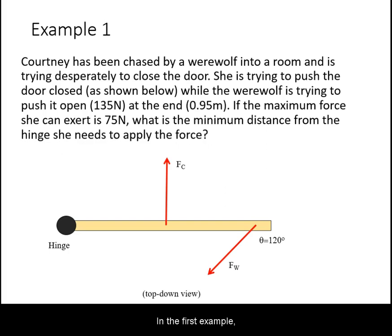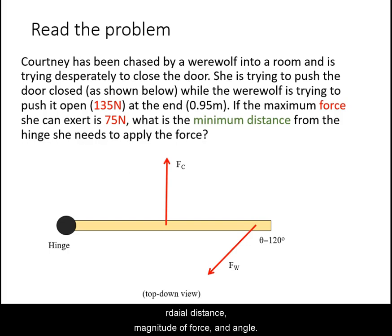In the first example, we have two forces acting on a door of different magnitude, radial distance, force, and angle. We start by reading the problem, looking for all the relevant quantities for radial distance, magnitude of force, and angle.